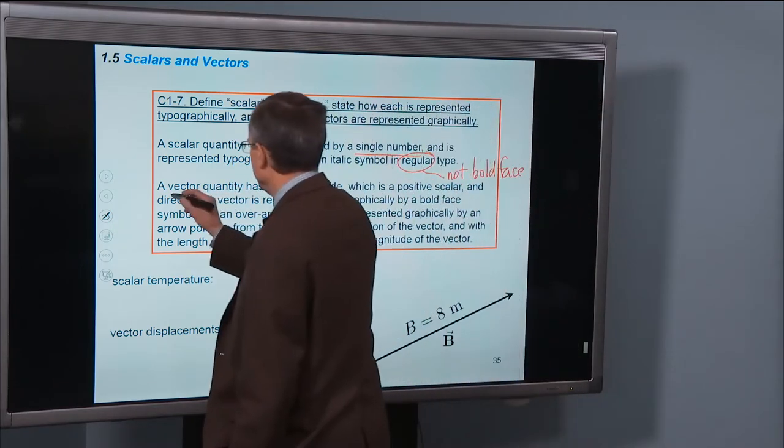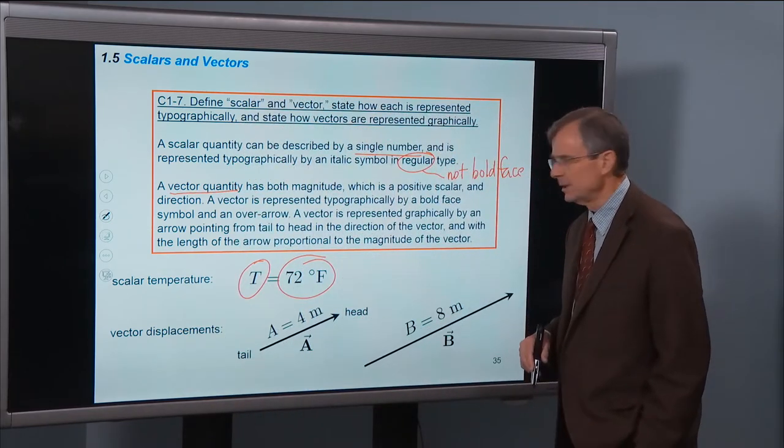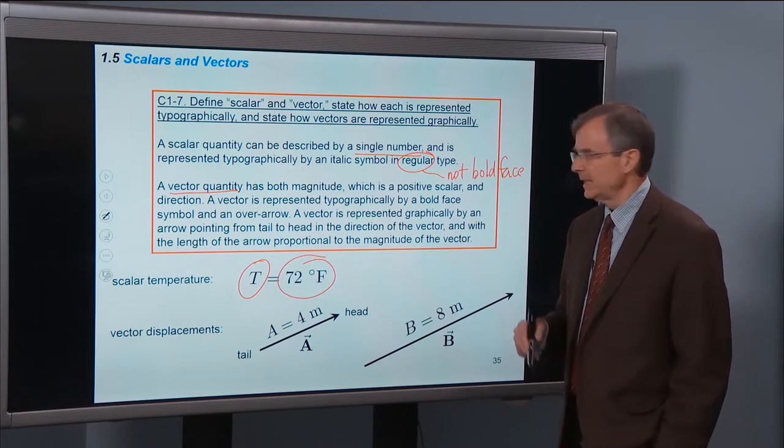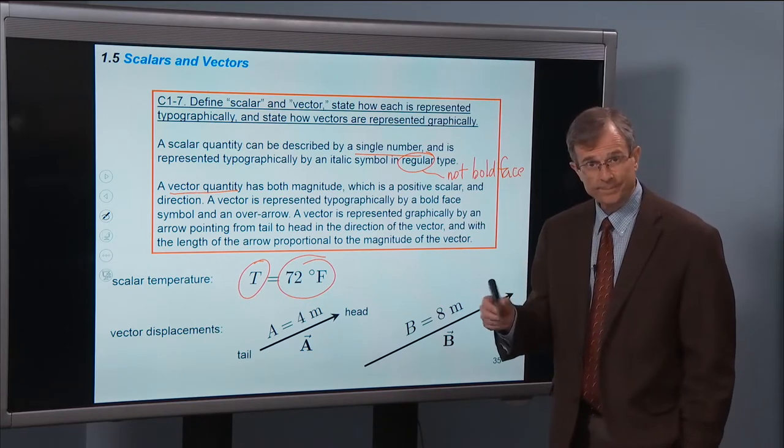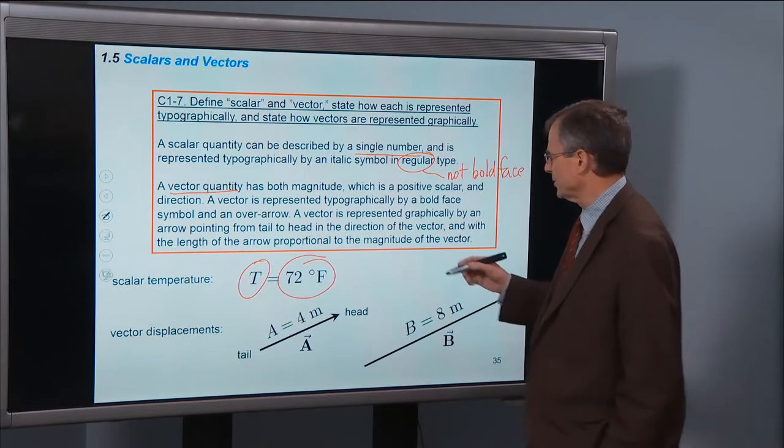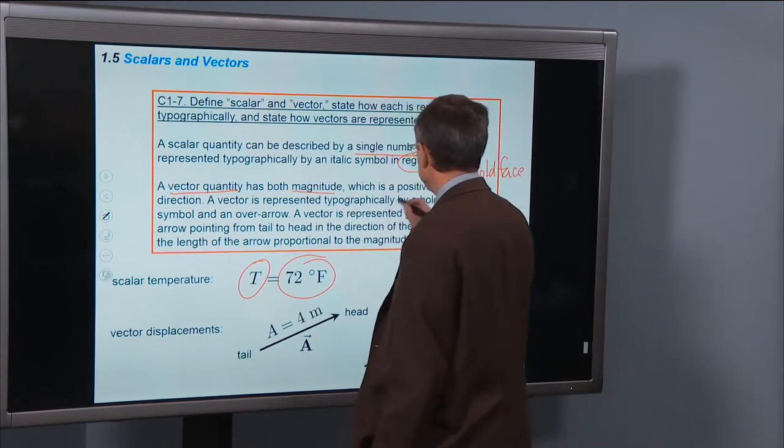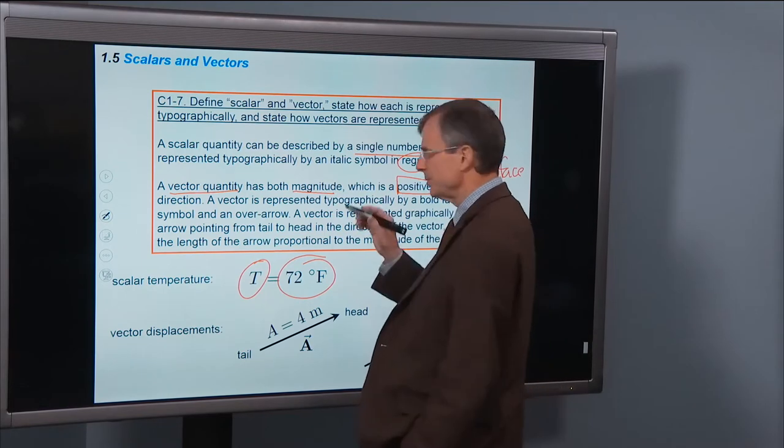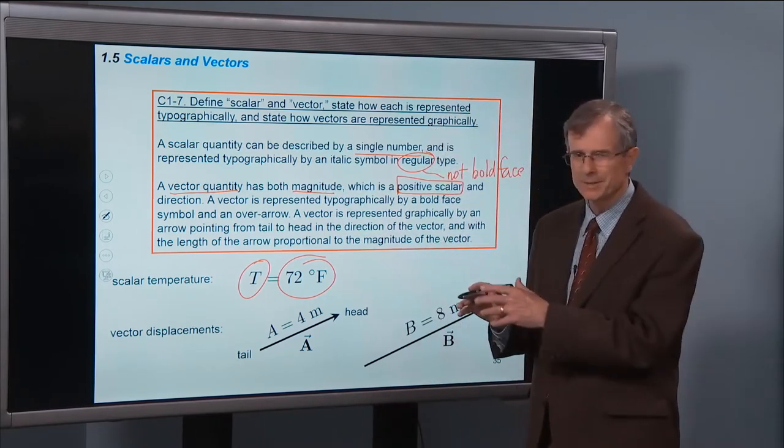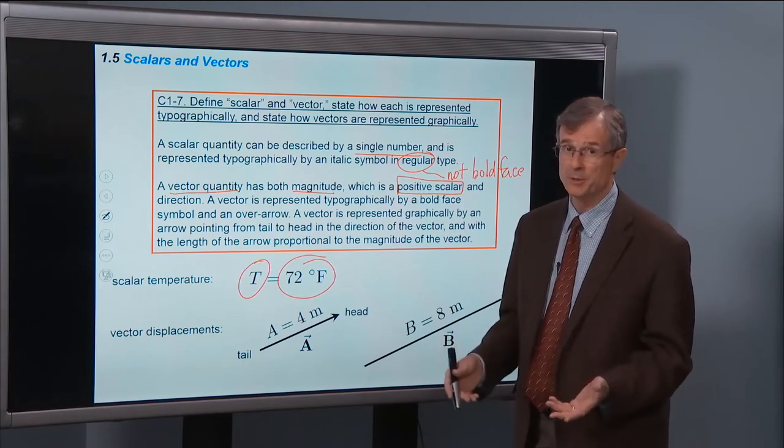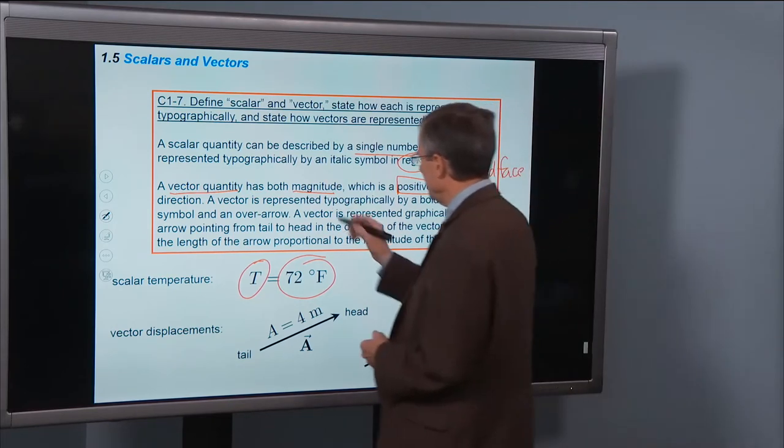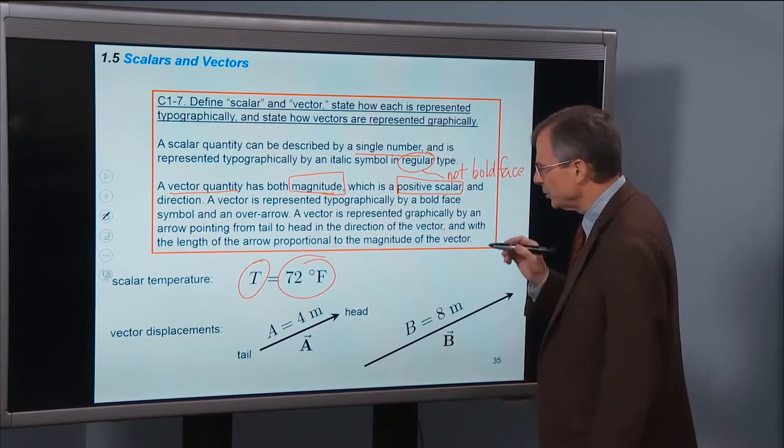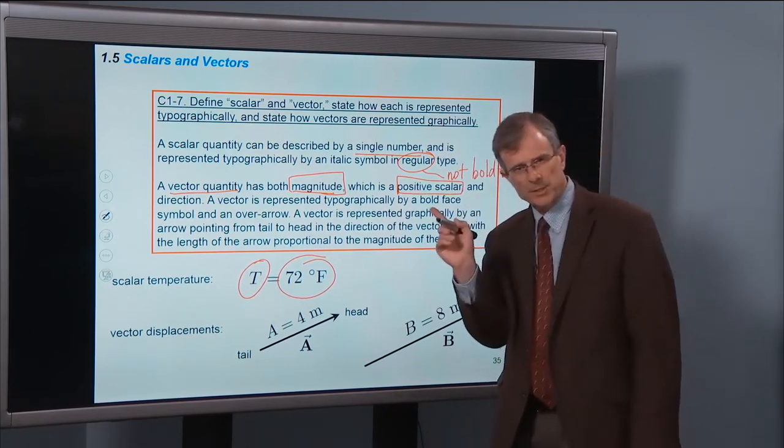What's a vector? A vector quantity has both magnitude, which is a positive scalar, meaning greater than zero, and a direction. This is an important concept right here, and I would encourage you to commit this and all other concepts to memory. The magnitude is a positive scalar. And a direction is just a direction in space.